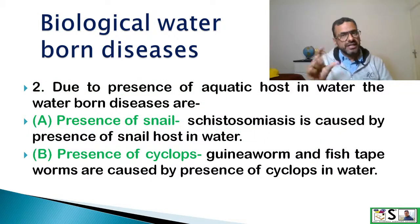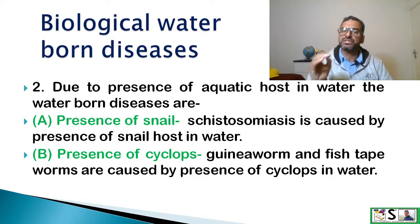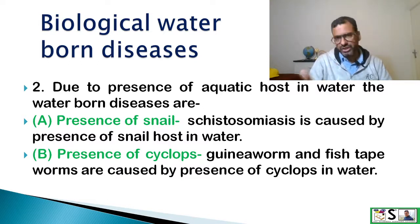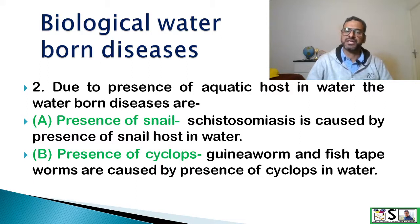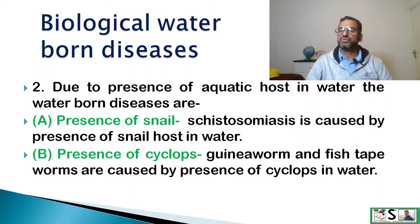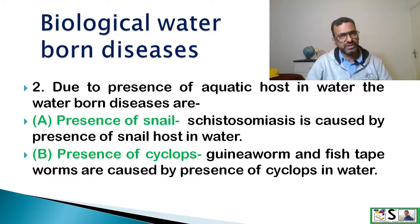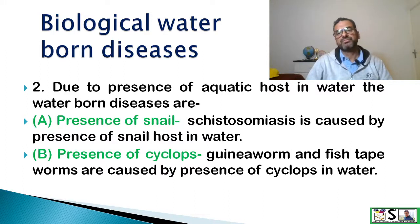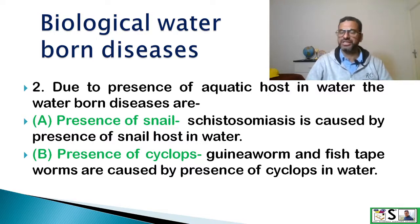The second classification of biological waterborne diseases is due to the presence of an aquatic host in the water. There are two types of hosts which can lead to waterborne diseases. Number one: presence of snail — schistosomiasis is caused by the presence of a snail host in the water. Due to the presence of cyclops, guinea worm and fish tapeworm are caused by the presence of cyclops in water.